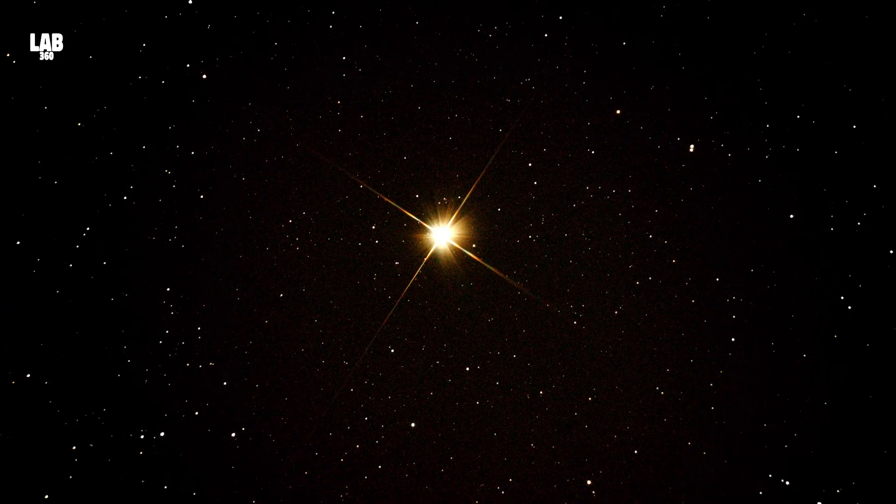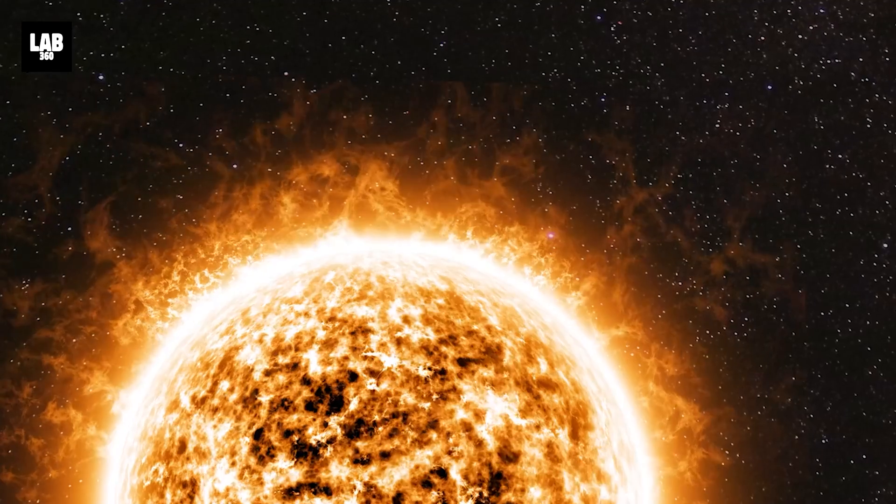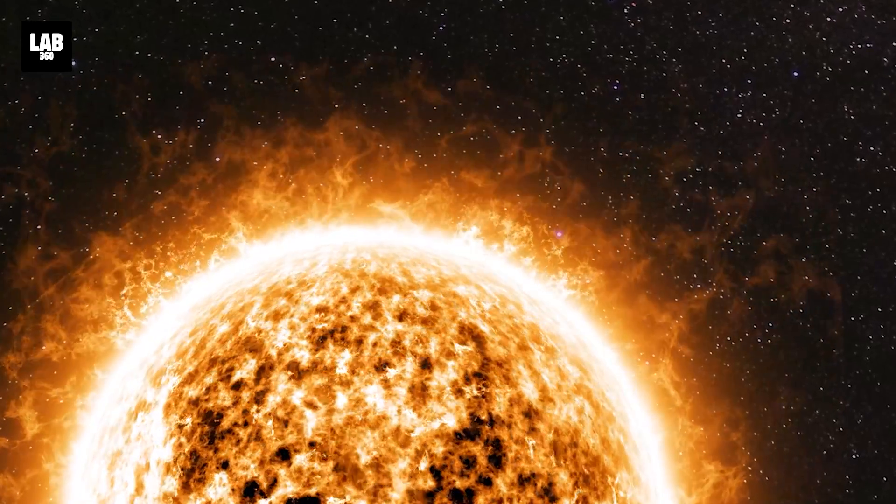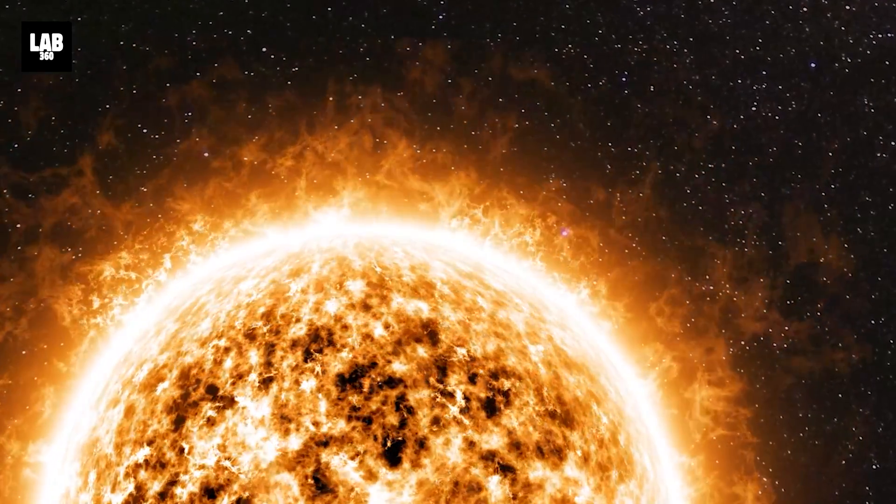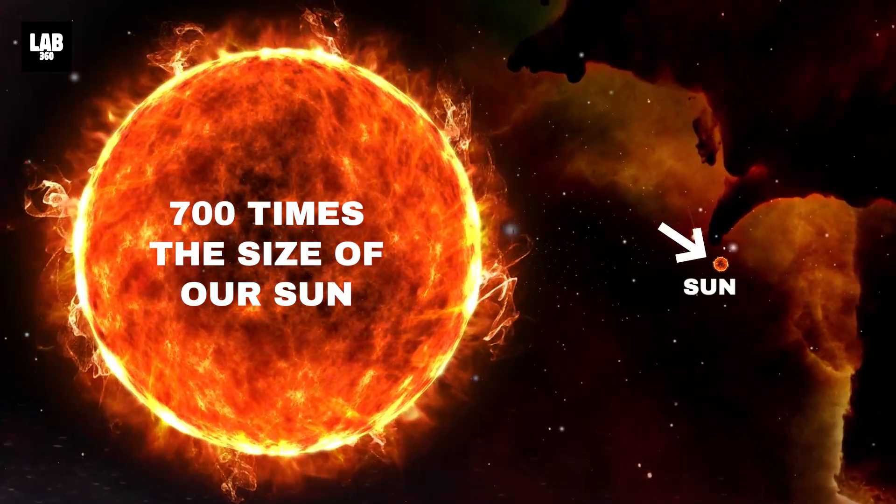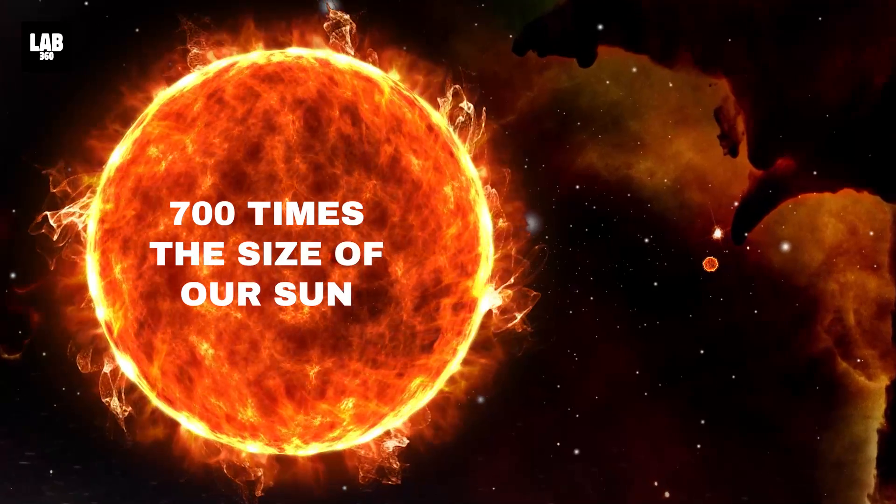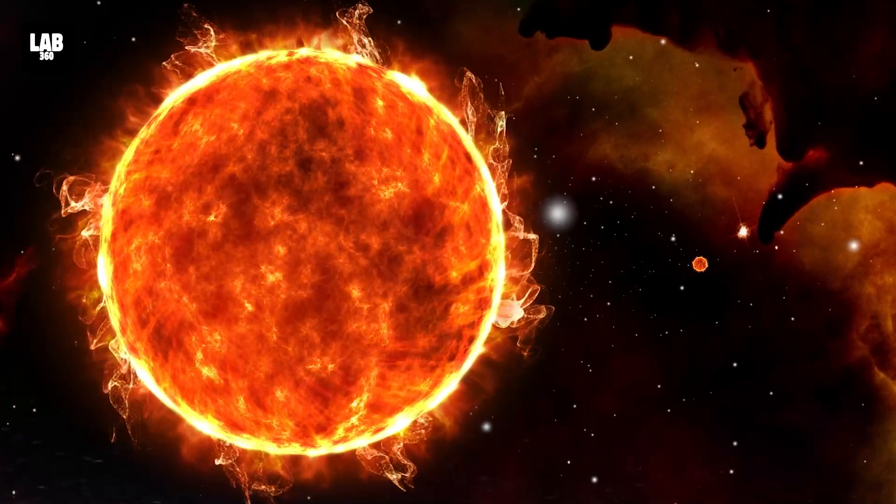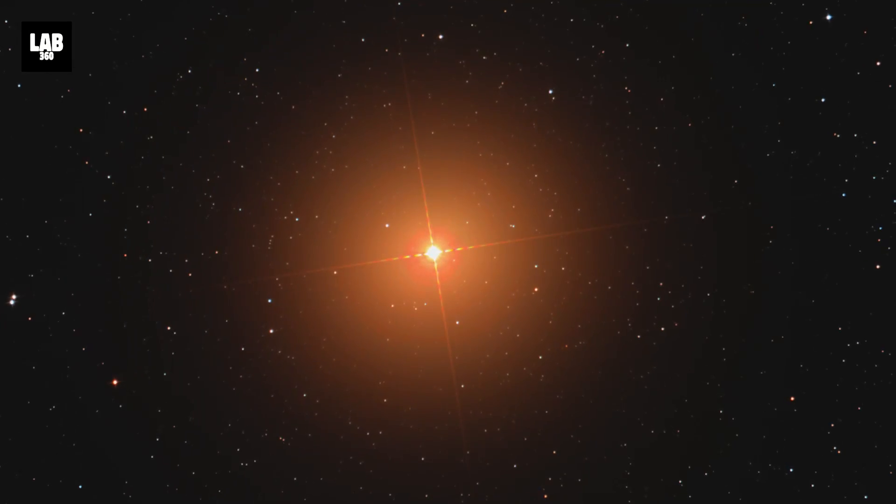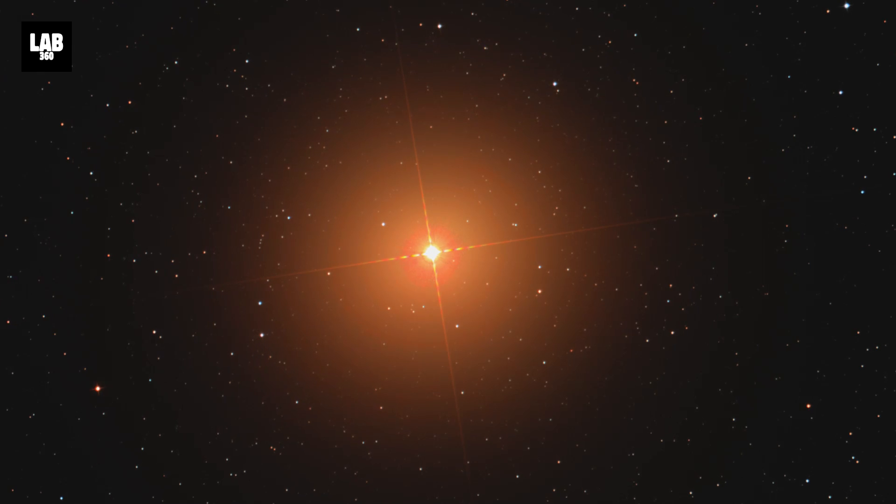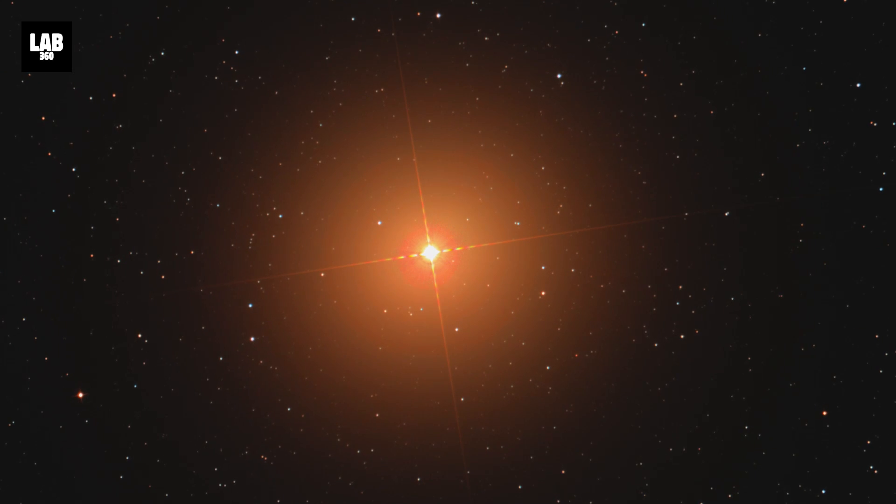Betelgeuse is roughly 10 million years old, an infant when compared to the Sun which is nearly 5 billion years old. But being 700 times the size of our Sun, it burns through its materials faster, thus giving rise to the bright reddish light which is so clearly visible from the Earth in the night sky.